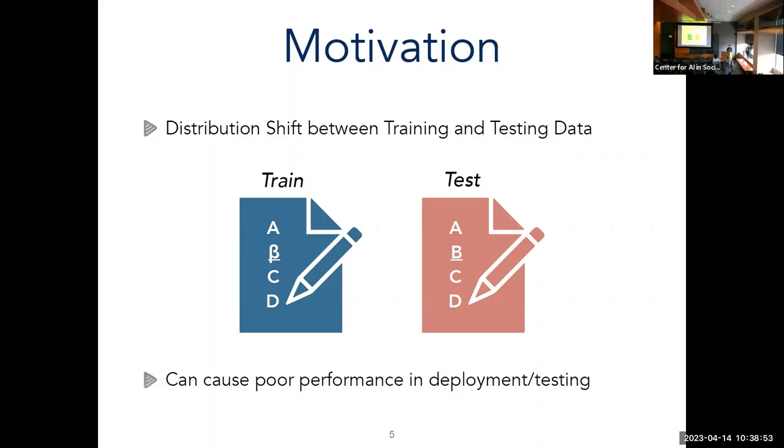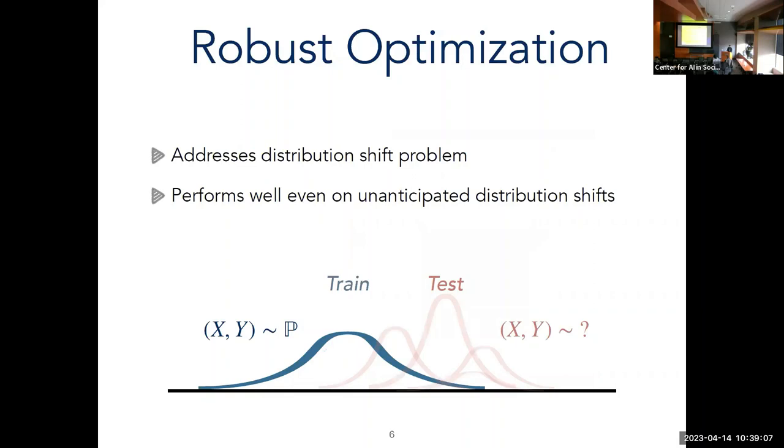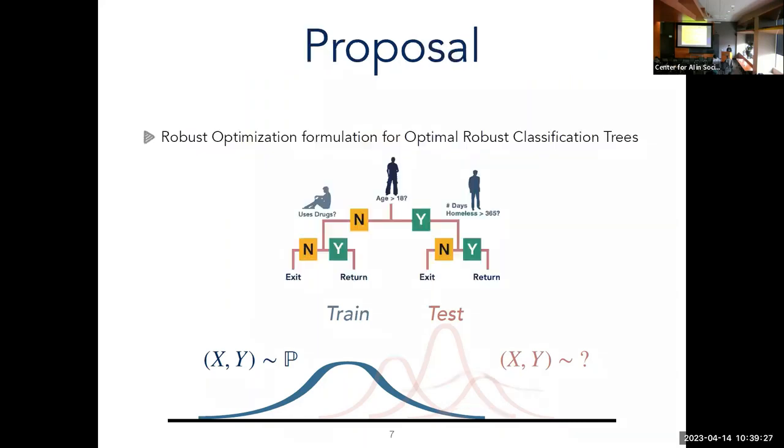And this can cause poor performance in that deployment phase, because if you're training your model on data that doesn't look like your deployment data, then you may have much more errors than you would want. So in order to tackle this issue, we propose using robust optimization, which addresses the distribution shift problem without having to actually know what the exact distribution shift will be in your deployment phase. And it also has been shown to perform well, even if the distribution of your testing set is perhaps slightly different than what you anticipate. So with that in mind, we propose a robust optimization approach for building these robust classification trees.